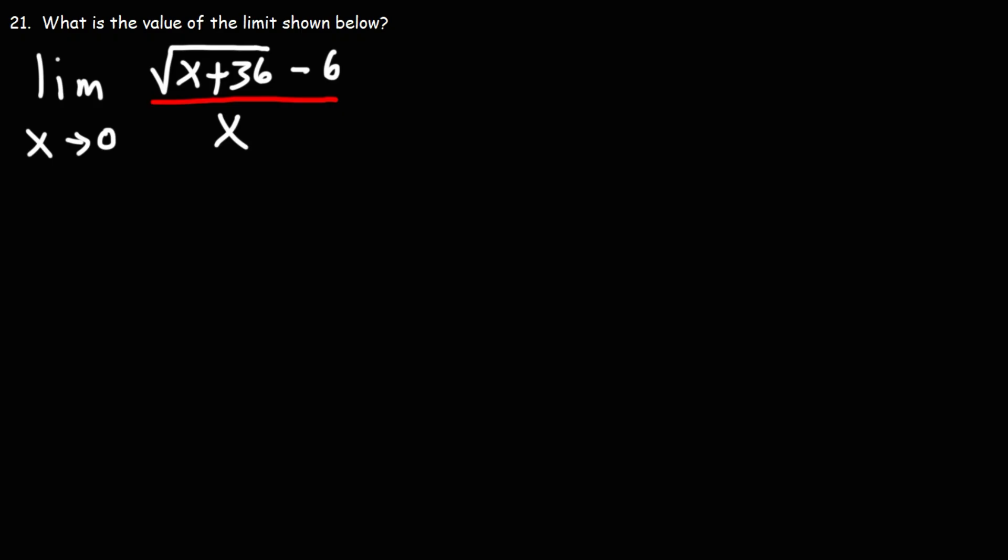So here we have a fraction with a square root. The method we're going to use for this problem is very similar to the previous problem. We need to multiply the numerator and the denominator by the conjugate of this expression.